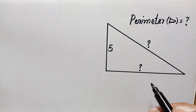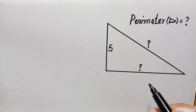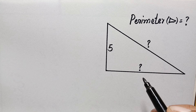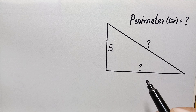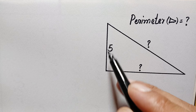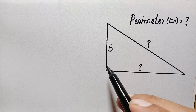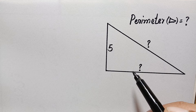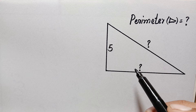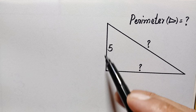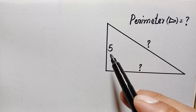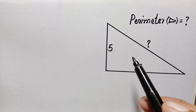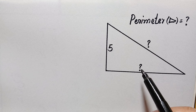Hello everyone, welcome. Today we have a nice geometry math problem. We have a right angle triangle whose perpendicular side is given. Our target is to find the perimeter of this right angle triangle. Looking at this figure, we have only one side of this triangle given, and the perimeter is the sum of all three sides, so we have to find out the length of the other two sides.